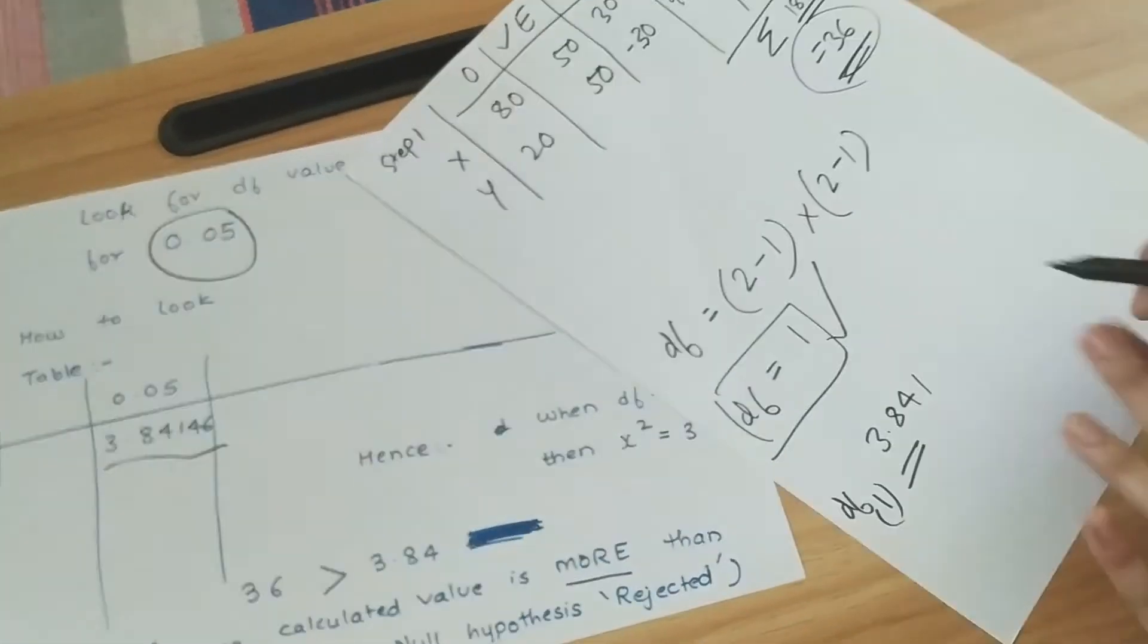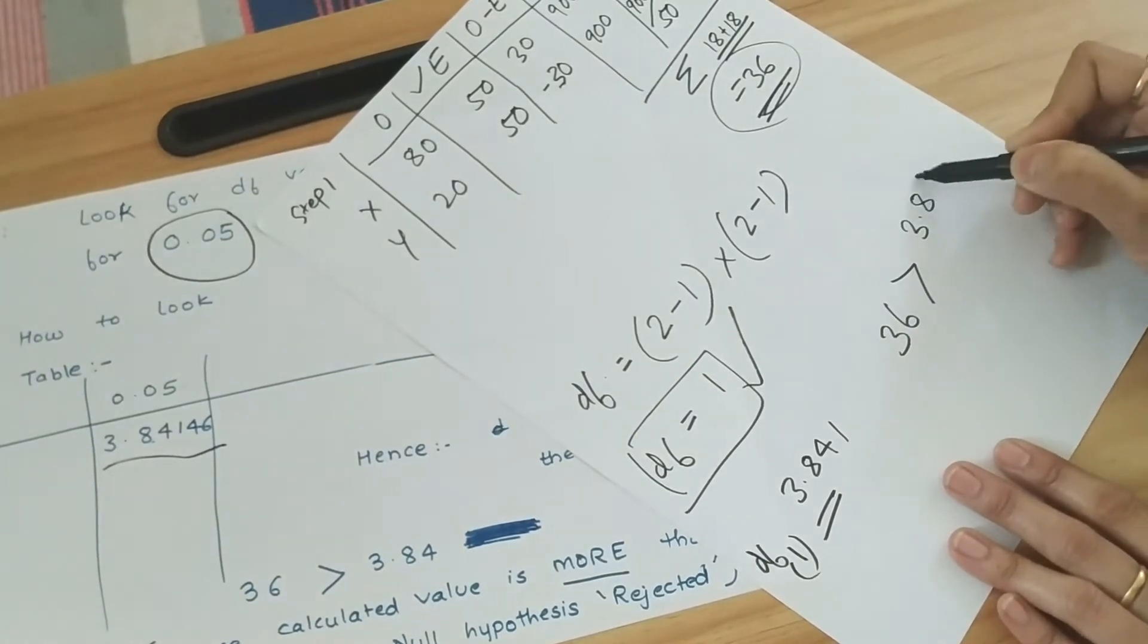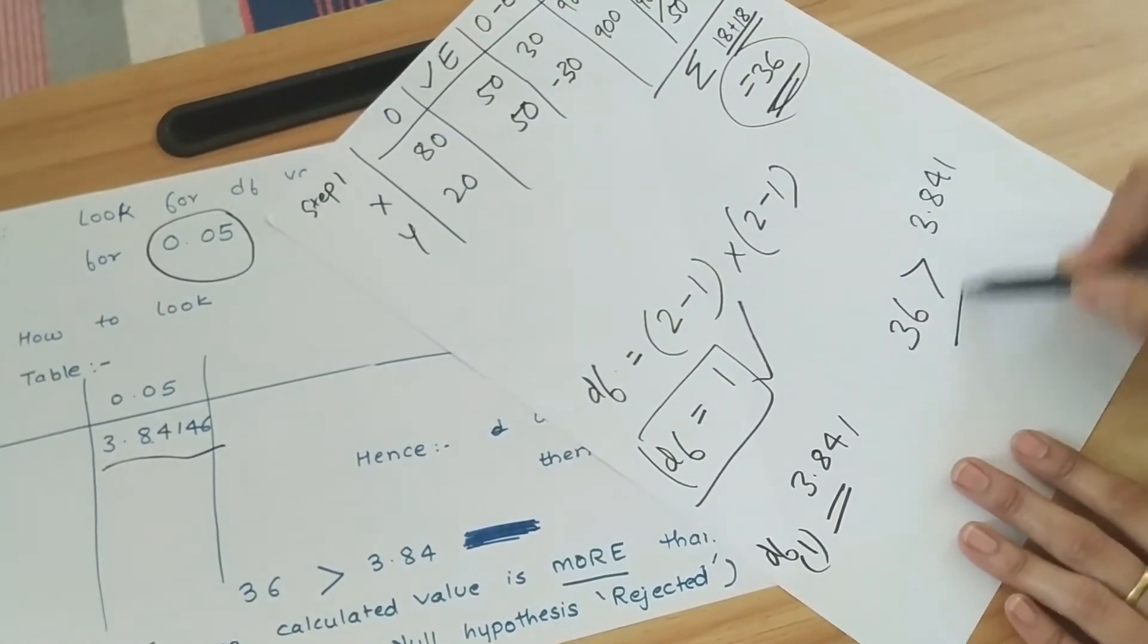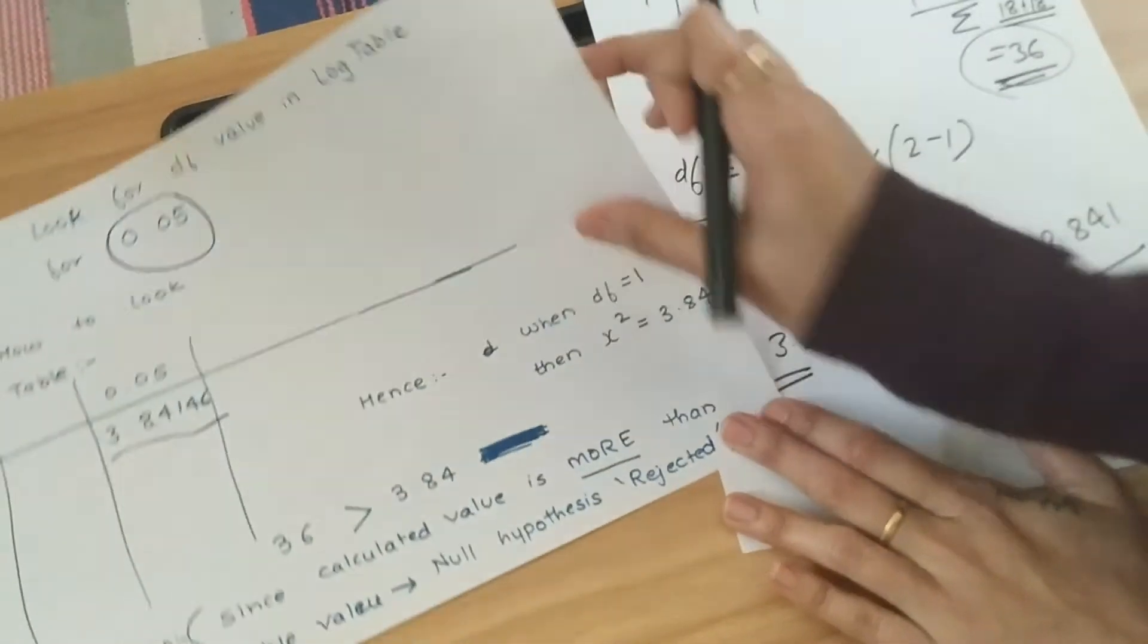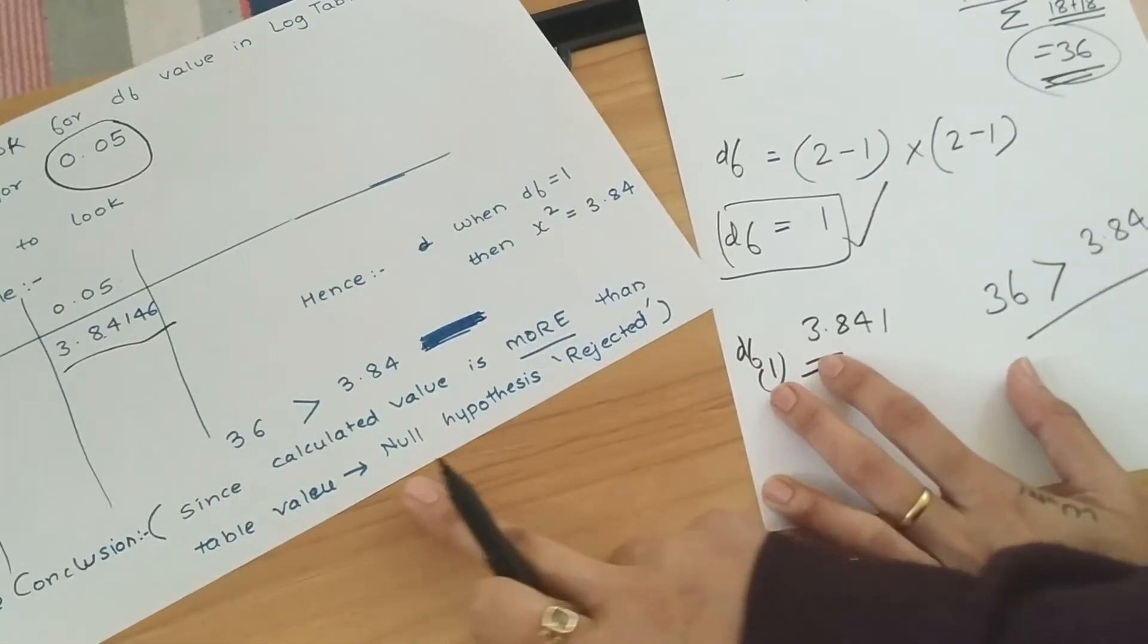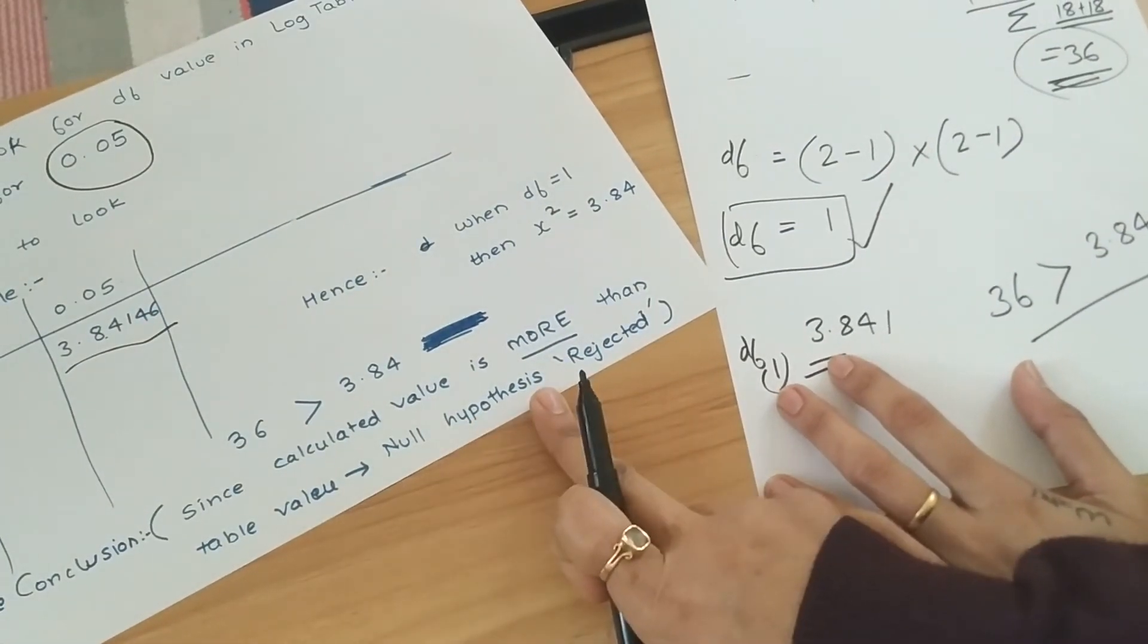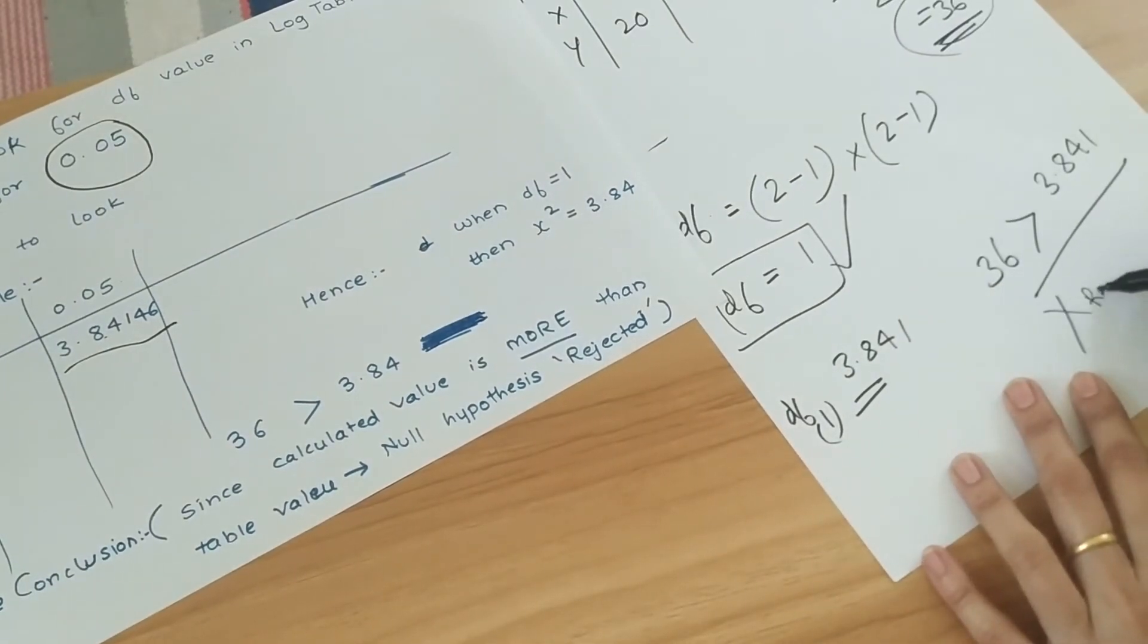But what we have got here is 36. So 36 is greater than 3.841. When this is the case, since the calculated value is more, then what you have is null hypothesis is rejected. So this is rejected.